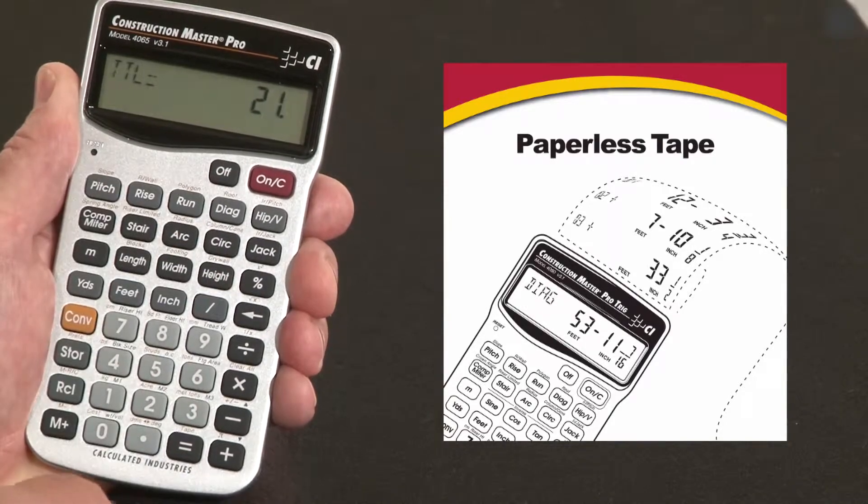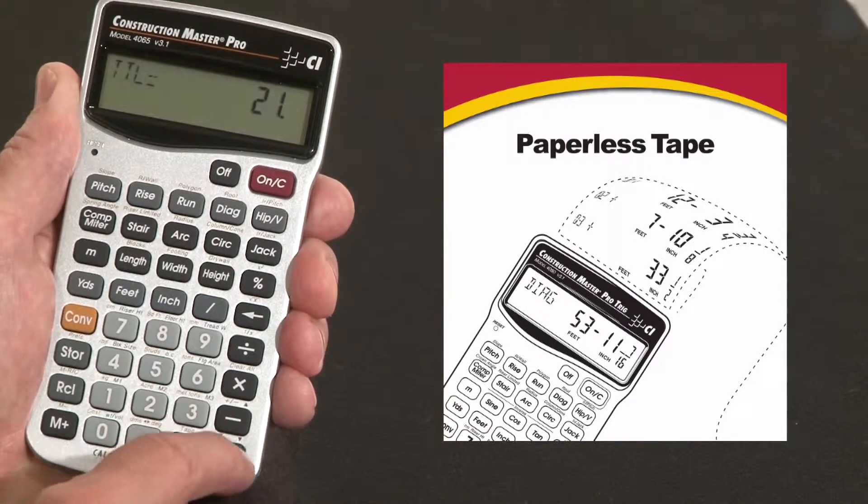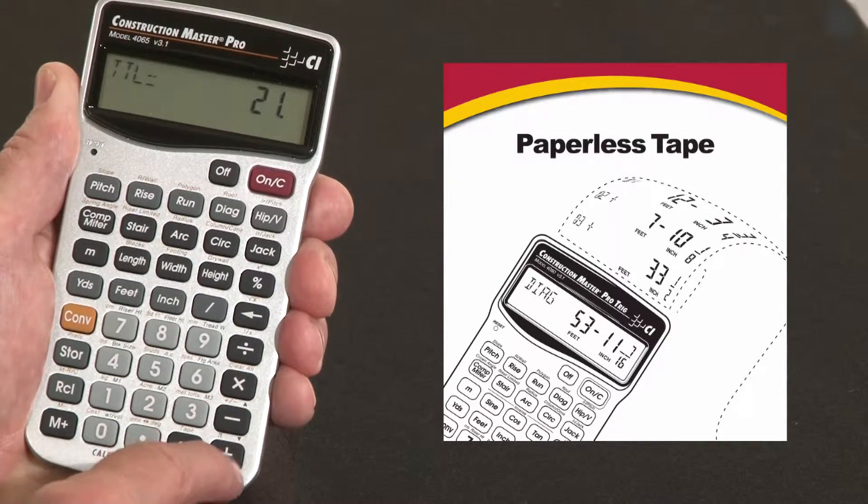It says the total is twenty-one. The plus and minus keys have little arrows up and down over them. So using these two keys, I can go up and down that list of entries.